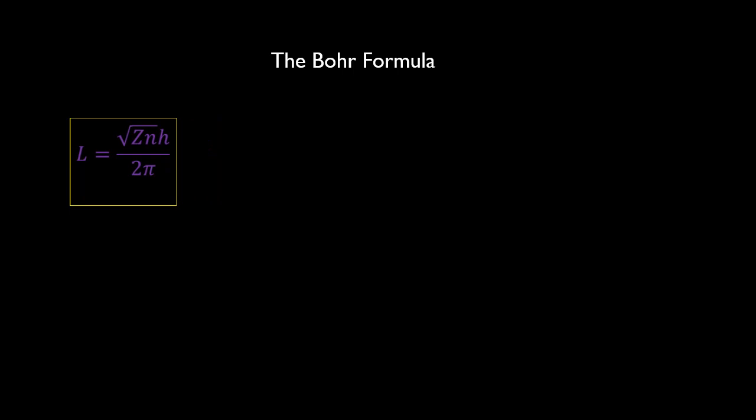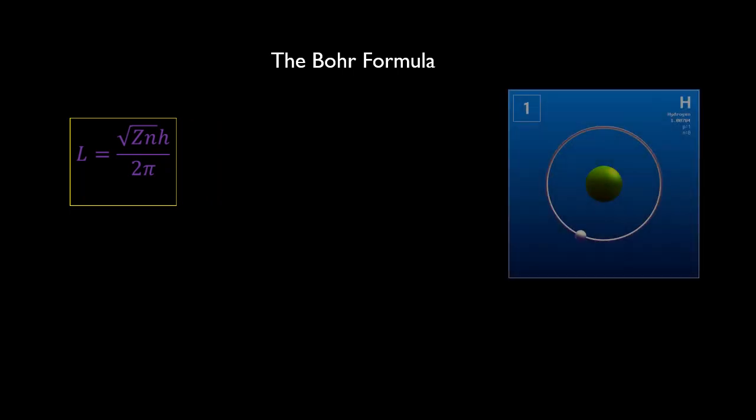If we consider a simple case like the hydrogen atom, which has just one electron going around one proton, just like Niels Bohr did, then z is equal to 1. If we also let the constant n be equal to some other constant, η squared, we can write the momentum equation in the form ηh over 2π. This right here is the Bohr quantization equation for the hydrogen atom.